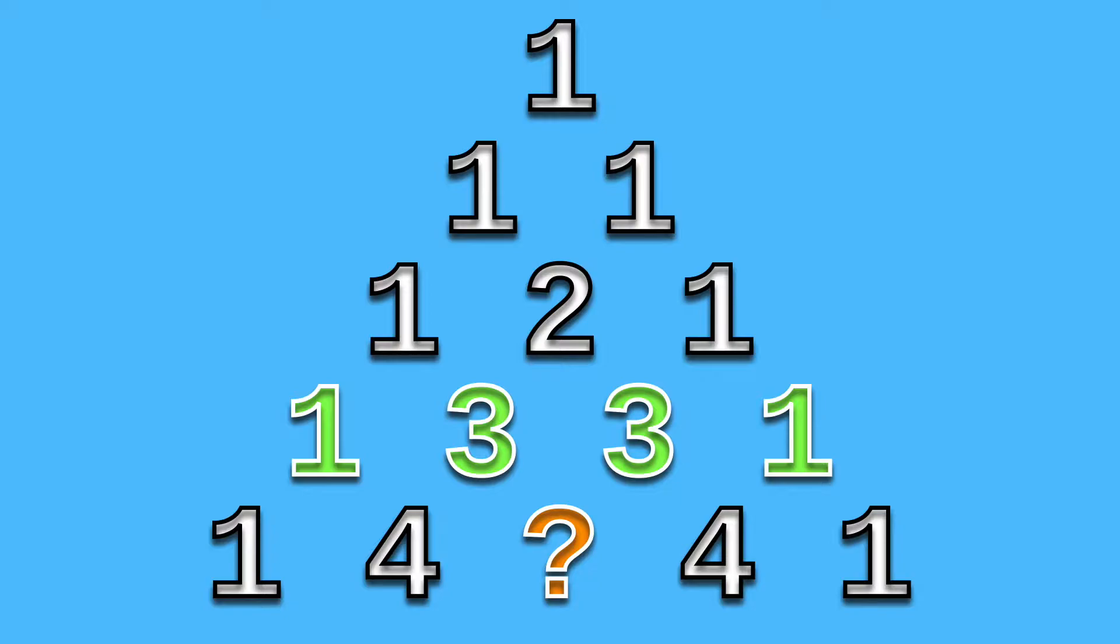The fourth row is 1, 3, 3, 1. From bringing down the 1s, adding the 1 plus 2, and 2 plus 1 to make the 3s.